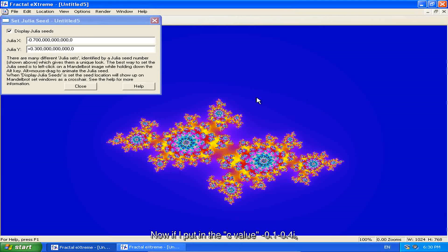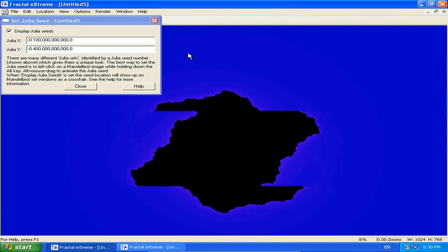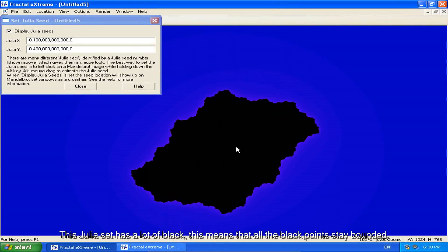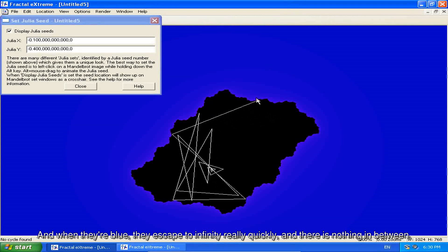Now if I put in the c value minus 0.1 minus 0.4i, this Julia set has a lot of black. This means that all the black points stay bounded. And when they are blue, they escape to infinity really quickly. And there is nothing in between.